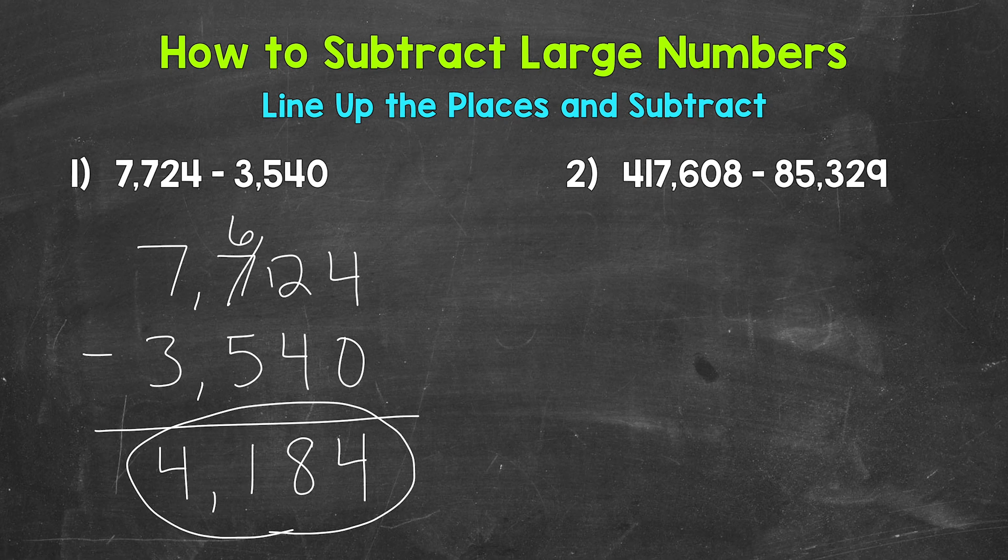Now, before moving on to number two, I do want to talk about borrowing and what is happening when we do so. For example, when we borrowed from the seven in number one, we borrowed one from the seven. Technically, we borrowed 100 because that seven is in the hundreds place and has a value of 700. Now we are subtracting in the tens place. So we technically have 20 minus 40, which we can't do.